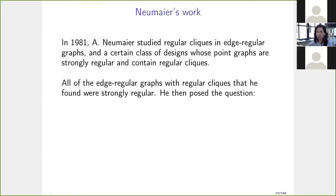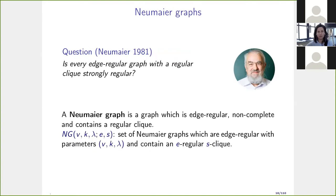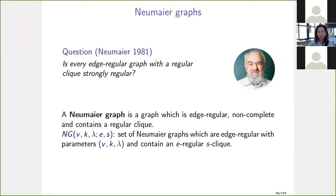Neumeier proposed the following question: is every edge-regular graph with a regular clique actually strongly regular? Before addressing this, let me introduce the concept of a Neumeier graph. A Neumeier graph is a connected edge-regular non-complete graph that contains a regular clique. The parameter set is represented as the triplet of edge-regularity (v, k, λ) plus the nexus e plus the order of the clique s. A strictly Neumeier graph is a Neumeier graph that is not strongly regular.